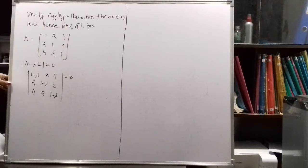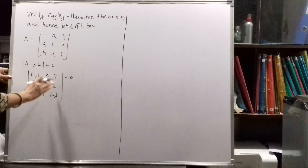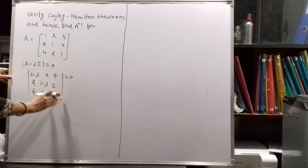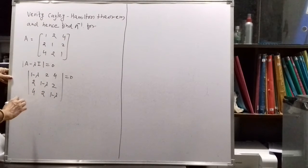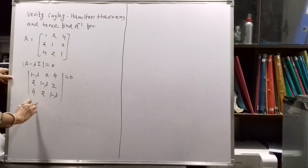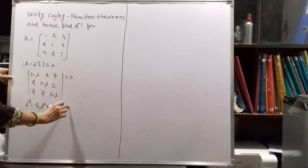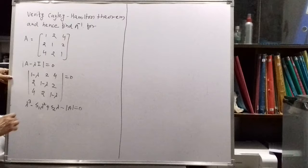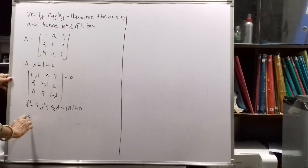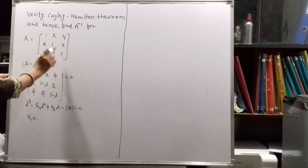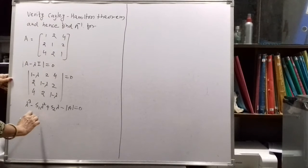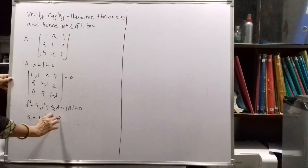Instead of expanding the determinant directly, we can find the characteristic equation using the formula: λ³ - S1·λ² + S2·λ - det(A) = 0. We need to find S1, S2, and det(A). S1 is the sum of the diagonal elements, that is 1 + 1 + 1 = 3.